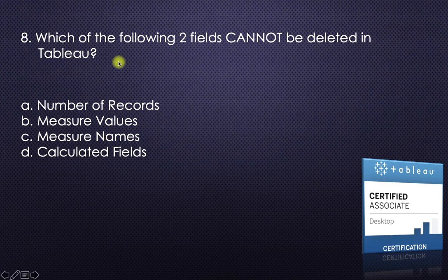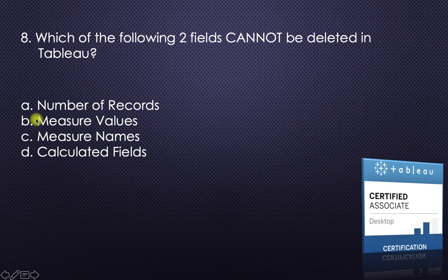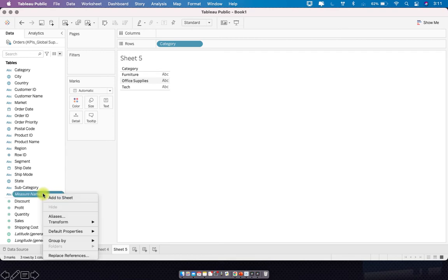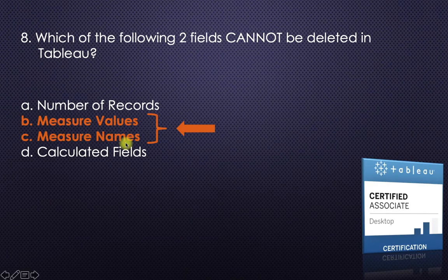Next: which of the following two fields cannot be deleted in Tableau? Calculated fields can be created and deleted. Number of Records is a Tableau-generated field — like a calculation — and can also be deleted. So we're left with Measure Names and Measure Values, which cannot be deleted. If you right-click Measure Names, you won't see a delete option, and same for Measure Values — no delete option.